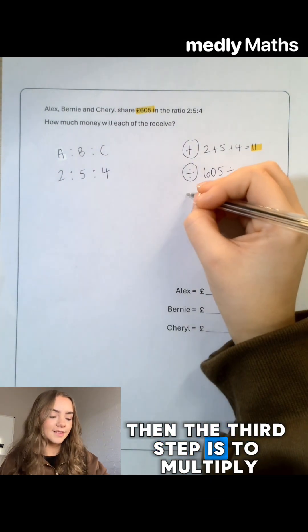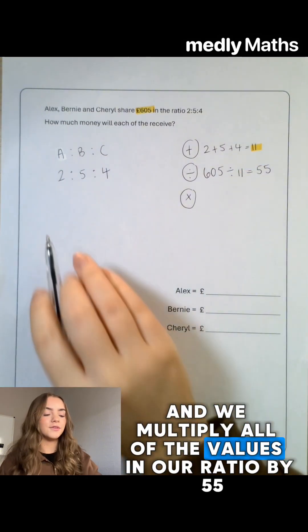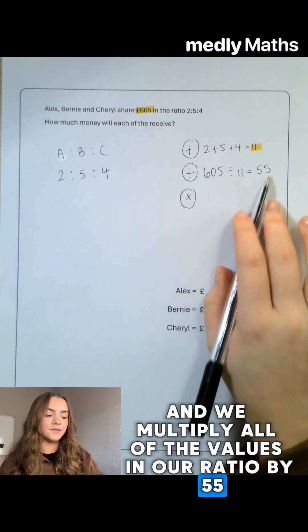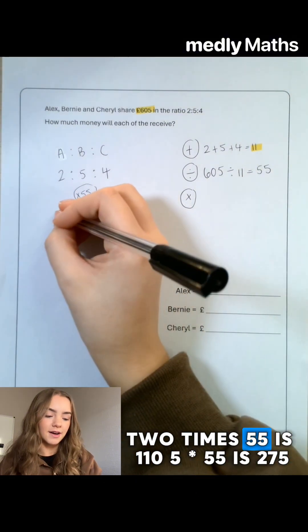Then the third step is to multiply and we multiply all of the values in our ratio by 55. 2 times 55 is 110.